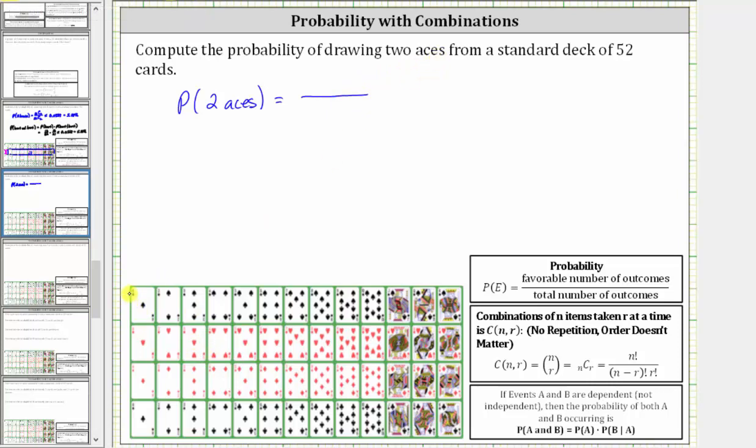Since there are four aces in the deck, and the order doesn't matter, the number of ways of selecting two aces from four aces is four choose two. So four choose two is the favorable number of outcomes.